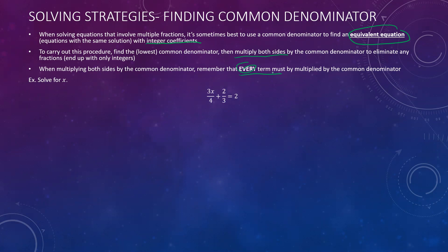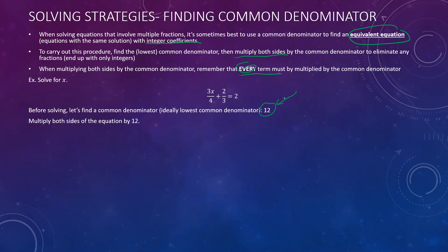Let's solve this equation here. It looks scary because there are a lot of fractions. What we can do is first find the common denominator — in this case 12 — ideally the lowest common denominator, because if you don't find the lowest, you'll have to do more work simplifying. Then we multiply both sides by 12. The reason we're allowed to do that is because we're doing it to both sides. When we do this, we multiply everything inside the brackets by 12 — so every single term gets multiplied by 12.